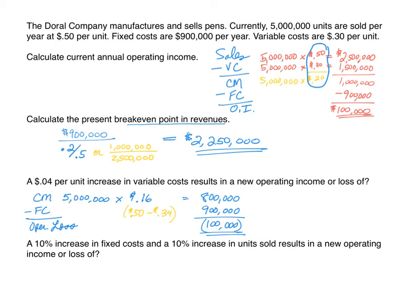The last question tells us there's a 10% increase in fixed costs and a 10% increase in the number of units sold. We use the contribution margin income statement: sales minus variable cost equals contribution margin, minus fixed cost equals operating income. The current 5 million units sold increases by 10%, so we're now selling 110% of what we currently sell, which is 5.5 million units.